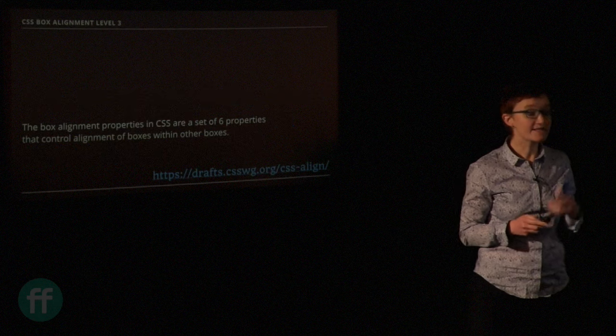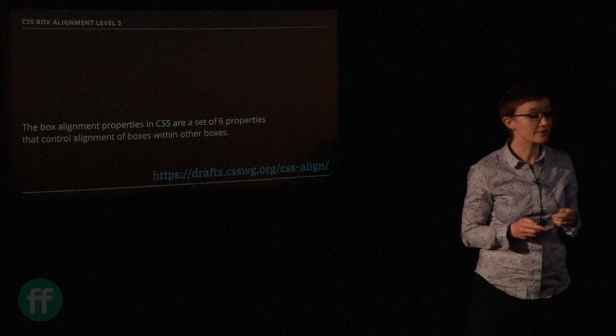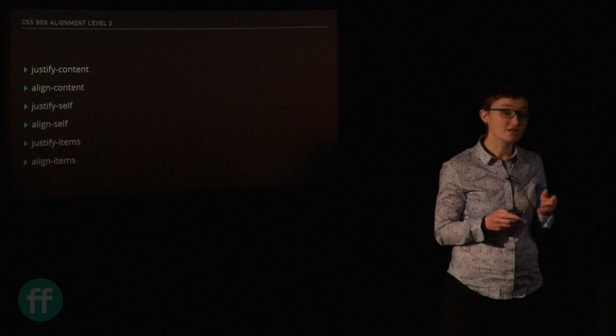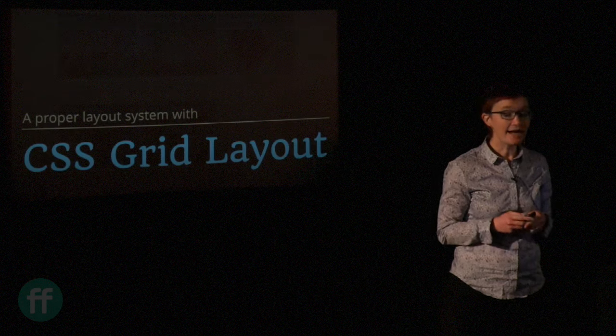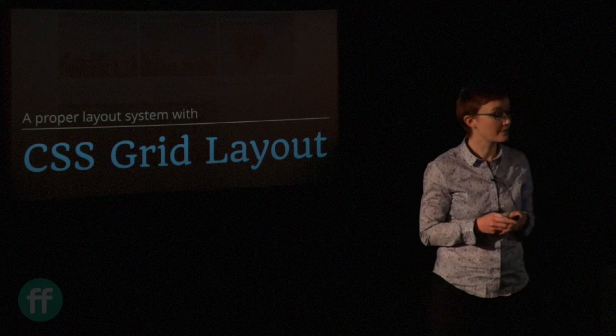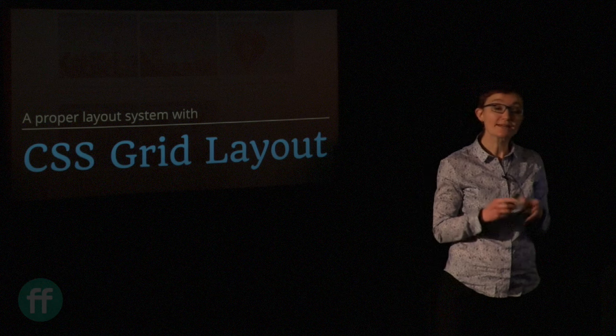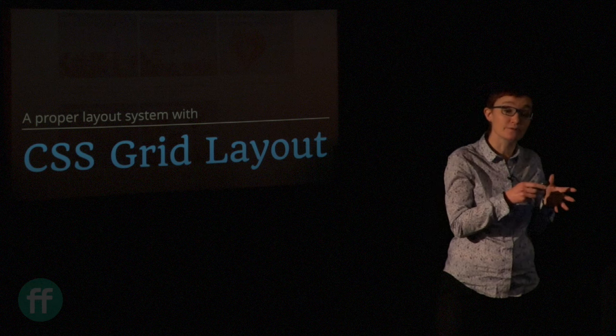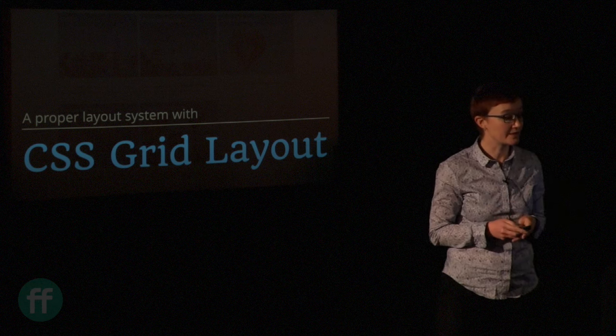The Box Alignment spec is a set of six properties that control alignment of boxes within other boxes. You'll be familiar with those if you've used flexbox. We're already starting to get the ability to use those somewhere else — and that's the new CSS Grid Layout spec. I have entire hour-long talks on grid, and I spent much of my workshop on it two days ago. It's a massive spec. I'm going to show you a few edited highlights, starting with how those alignment properties from flexbox have ended up in grid layout.